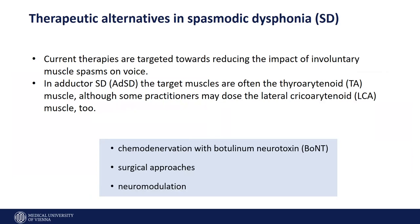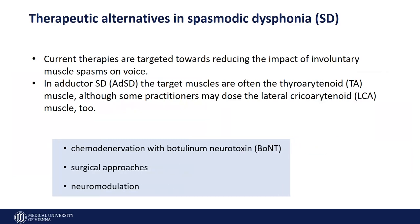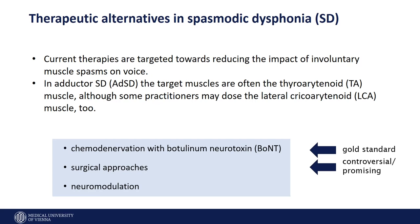What you have heard so far is the use of botulinum neurotoxin for chemo-denervation in spasmodic dysphonia. The chemo-denervation with botulinum neurotoxin is so far the gold standard. You will hear after my presentation some comments on surgical approaches. If you go to the literature and the past, you will find controversial discussions, but going forward there might be some promising surgical approaches. My focus is to talk about neuromodulation as a potential promising treatment in the future.